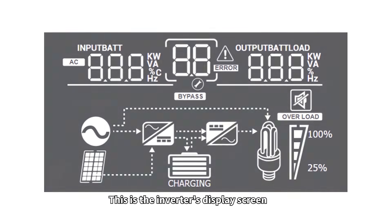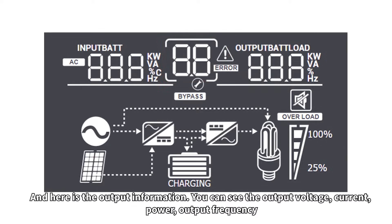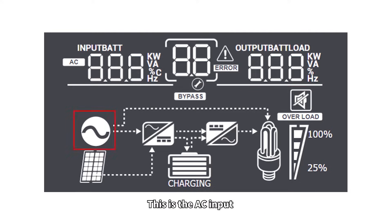This is the inverter's display screen and this is the information input screen. This is where the error code display is and here is the output information. You can see the output voltage, current, power and output frequency. This is the AC input.